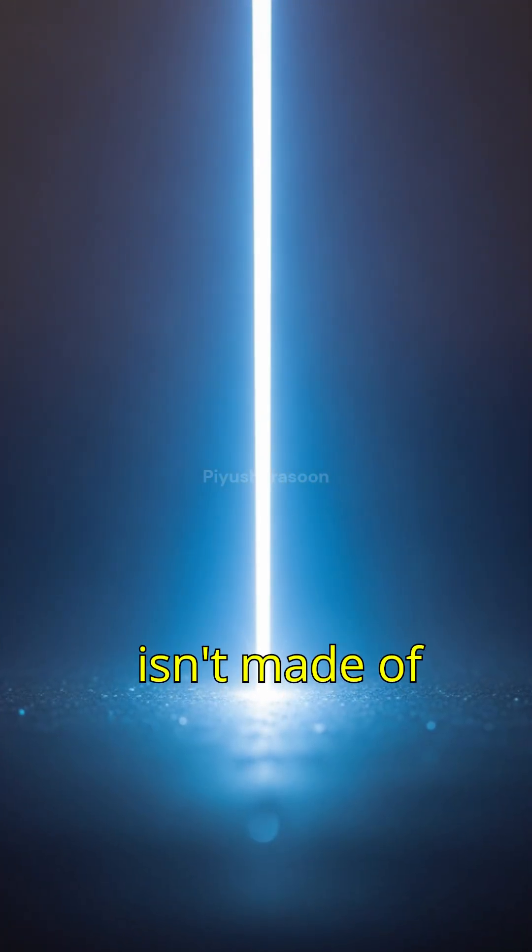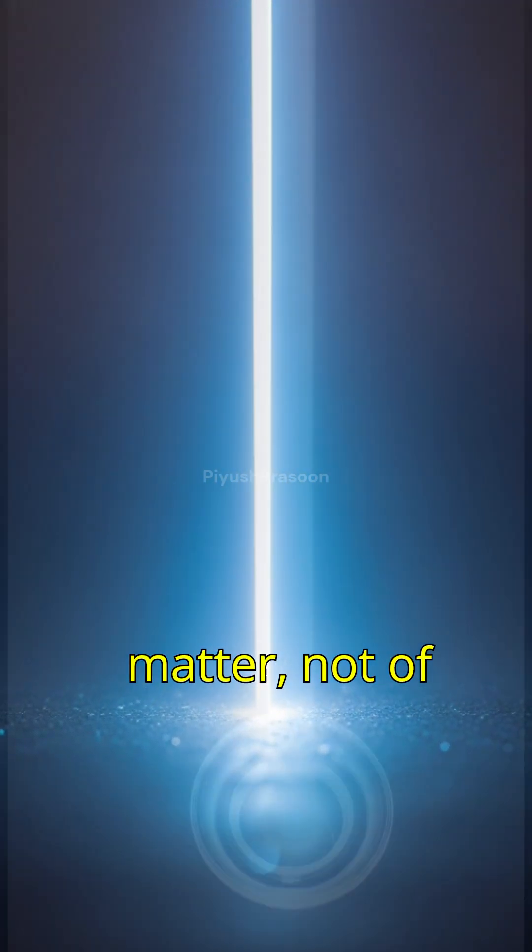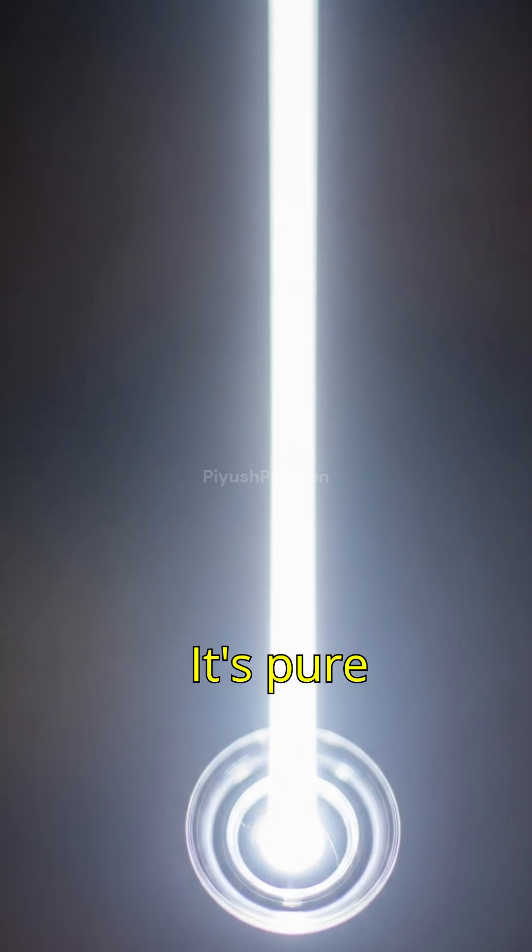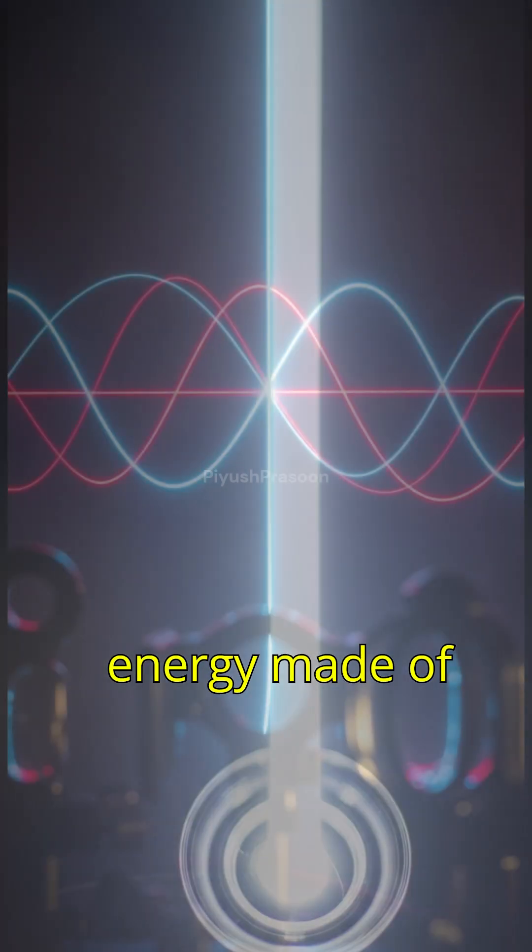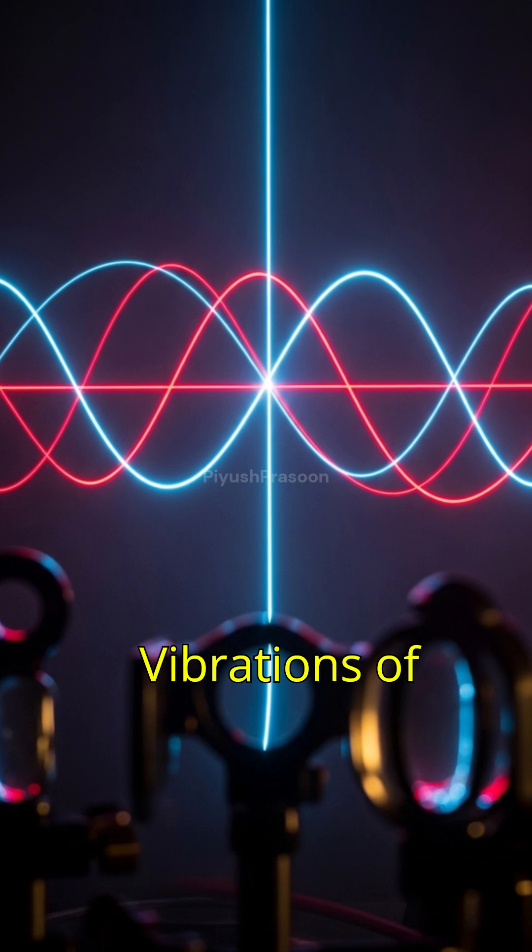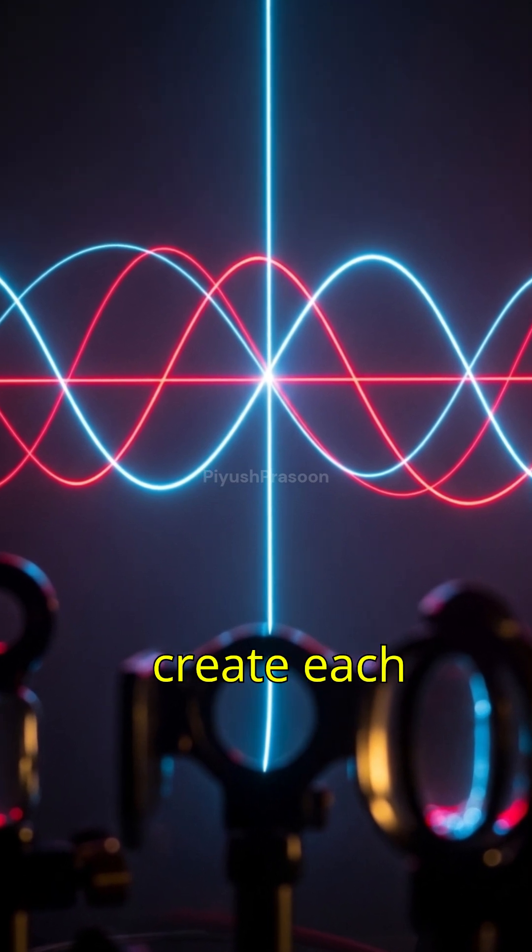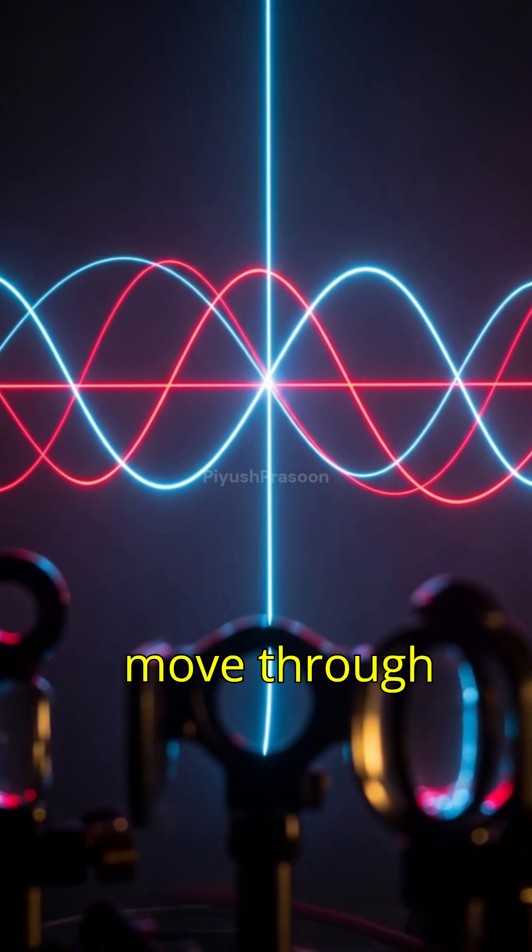Light isn't made of matter, not of atoms, not even electrons. It's pure energy made of electromagnetic waves, vibrations of electric and magnetic fields that constantly create each other as they move through space.